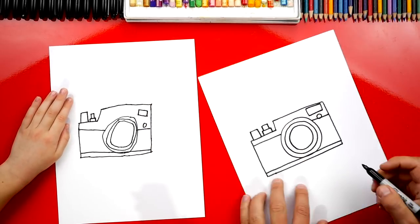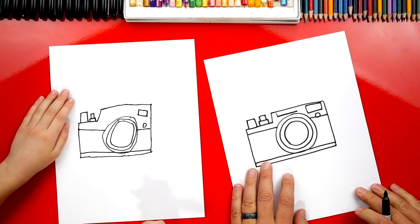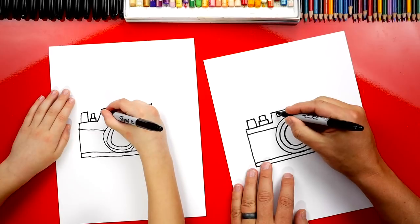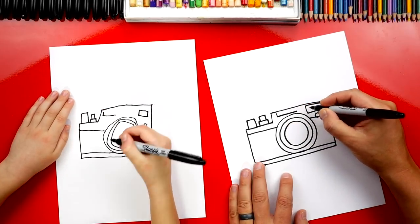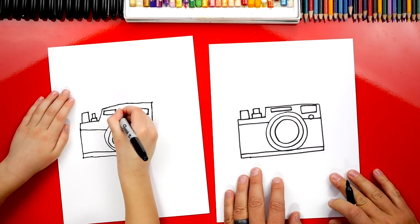And then let's add one more little detail right here. It's going to be a long rectangle above the lens. So I'm going to draw a short line and then a long bottom for our L. And then do the opposite upside down to connect it.